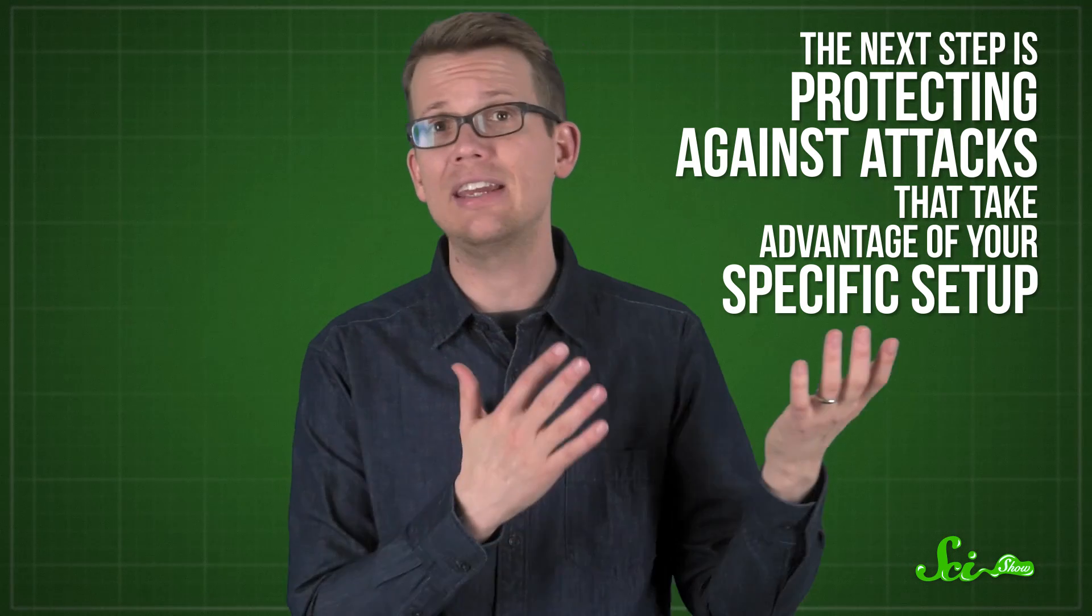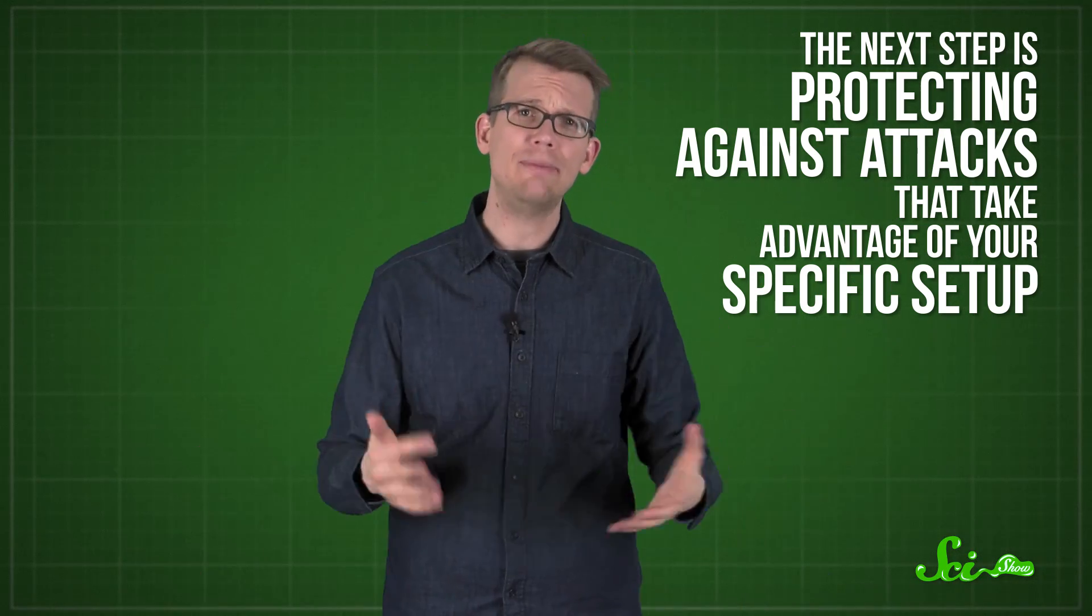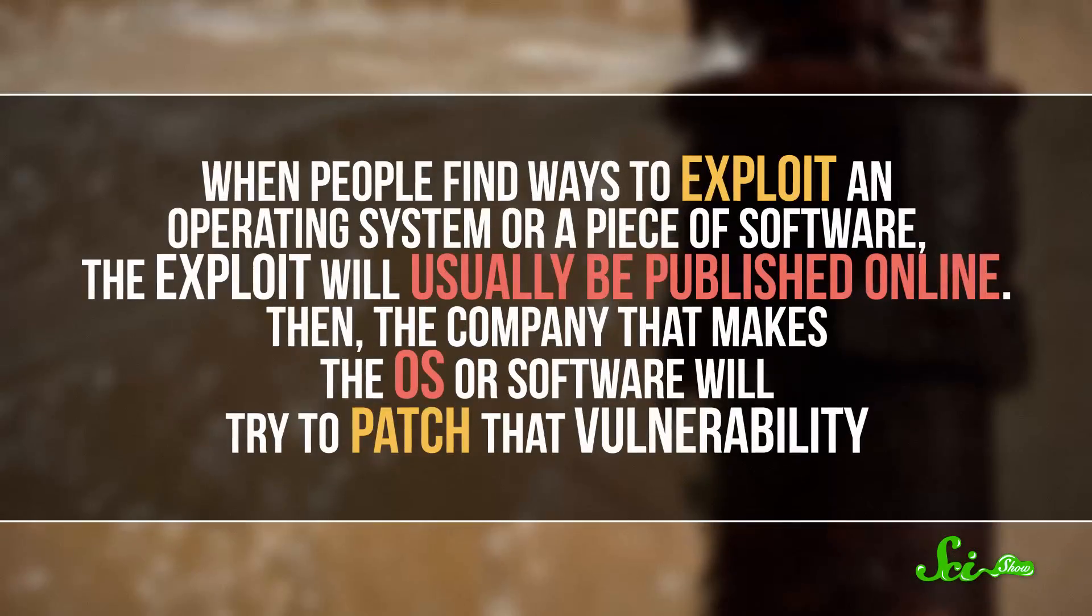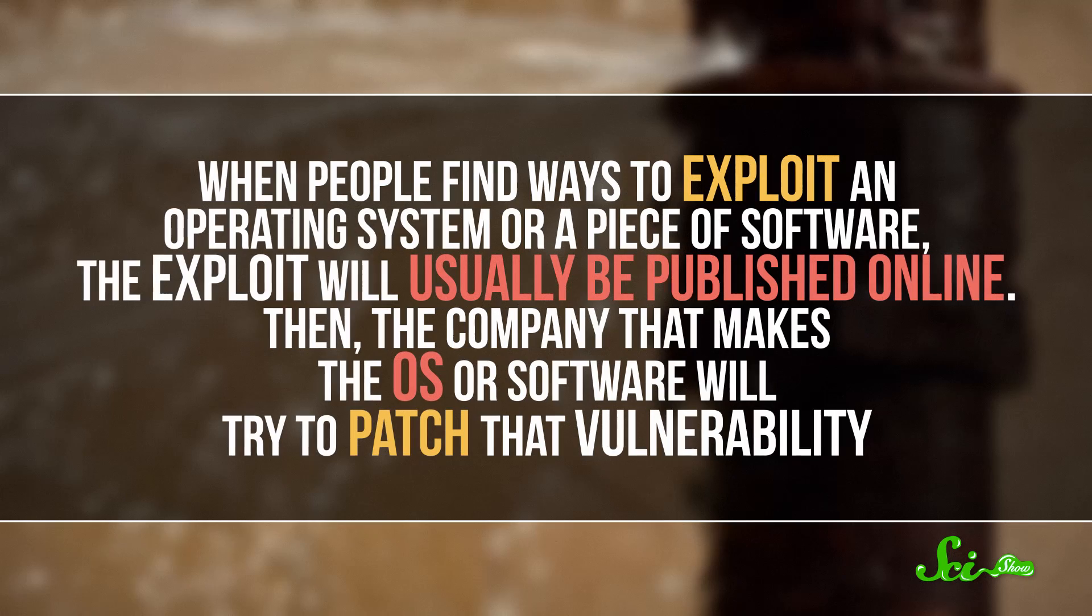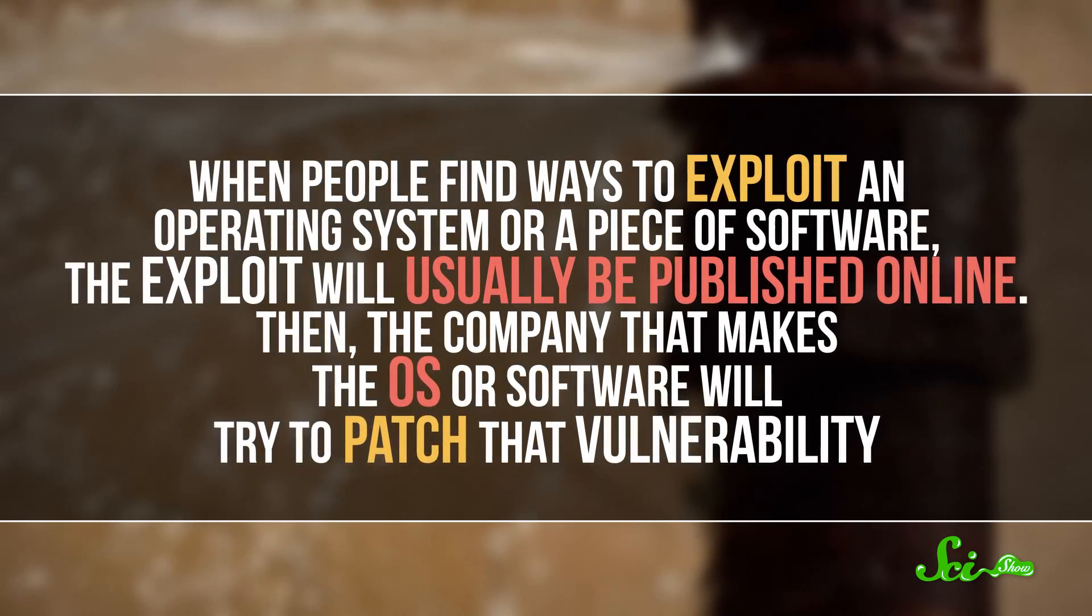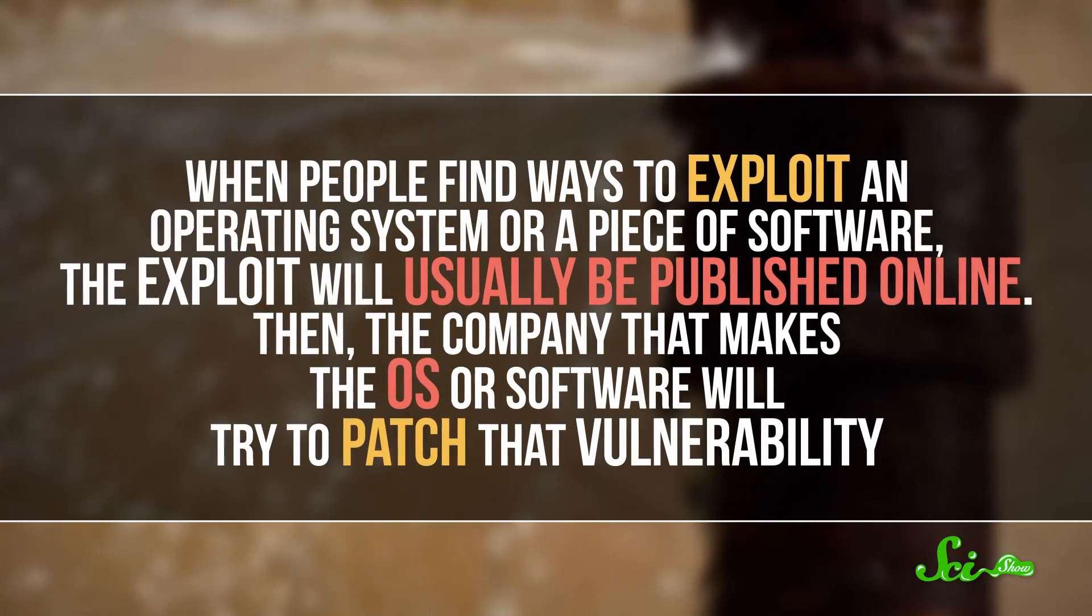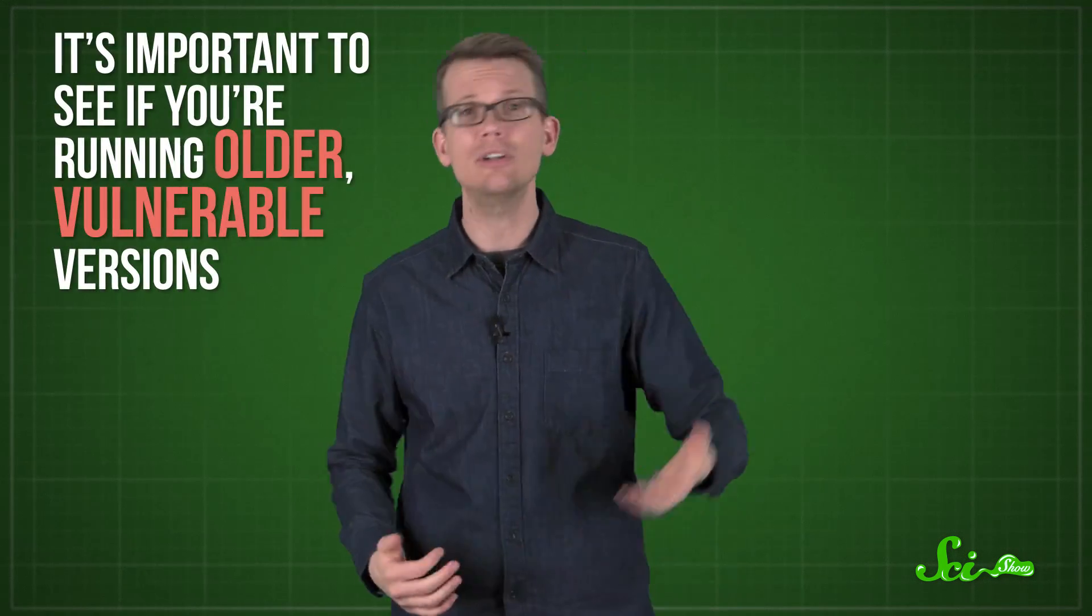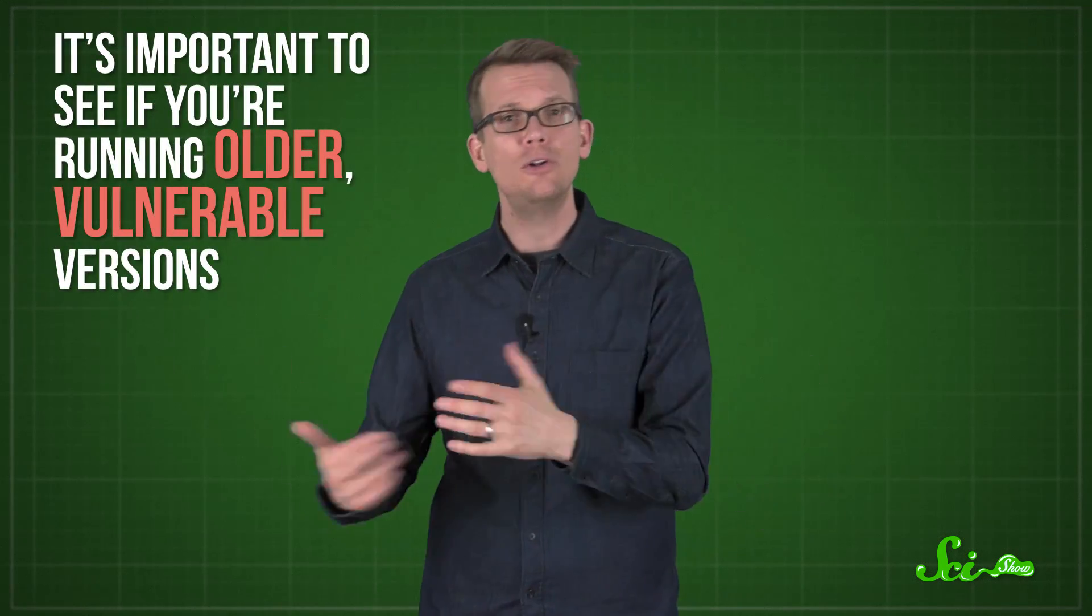Now, once you've done some recon, you may want to move on to protecting against the attacks that take advantage of your specific setup. Basically, you take a list of the hardware and operating system versions you're running, and see if they have any known hacks. When people find ways to exploit an operating system or a piece of software, the exploit will usually be published online. Then the company that makes the OS or software will try to patch that vulnerability. Patches and updates won't always be installed on your systems right away, so it's important to see if you're running older, vulnerable versions.